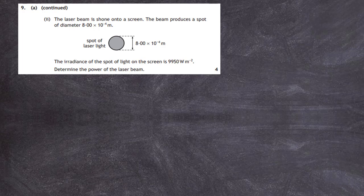Question 9 part A continued, part 2. The laser beam is shone onto a screen and the beam produces a spot of diameter 8.00 times 10 to minus 4 meters. The irradiance of the spot of light on the screen is 9950 watts per meter squared. For four marks, we're asked to determine the power of the laser beam.